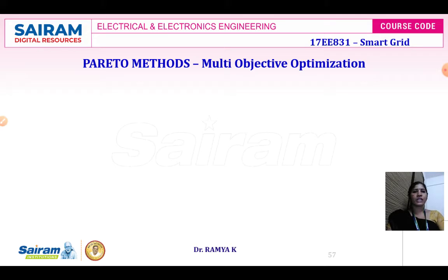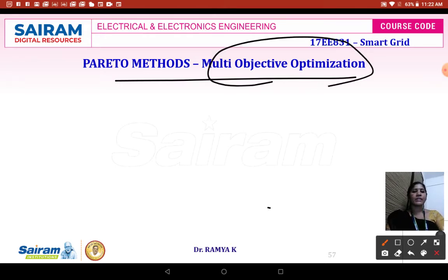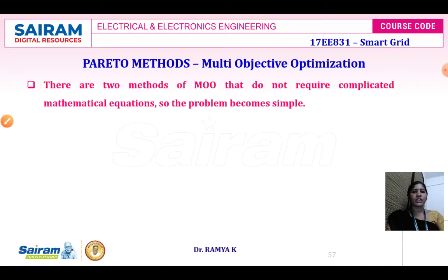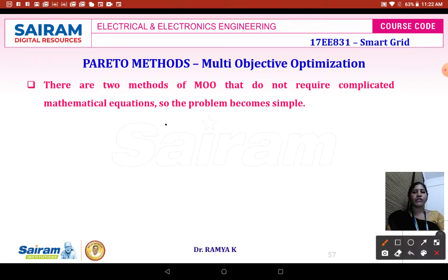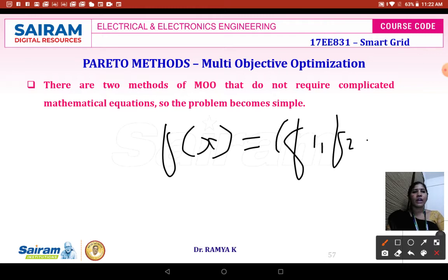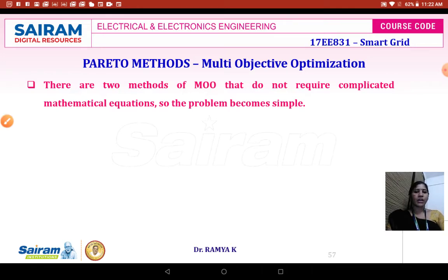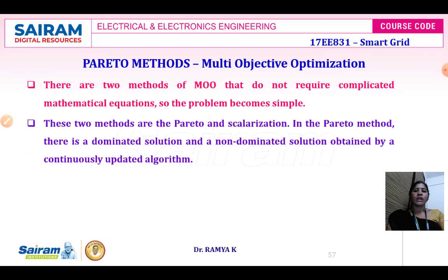The Pareto analysis method is used for solving multi-objective optimization problems. For a multi-objective optimization function, f(x) = [f1, f2, ..., fm], framing the optimization equation for m-stage optimization issues. There are two methods: the Pareto method and the scalarization method. In the Pareto method, there is a dominated solution and a non-dominated solution obtained by a continuously updated algorithm.